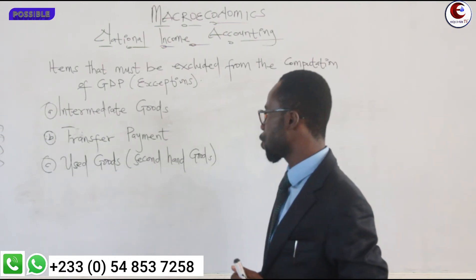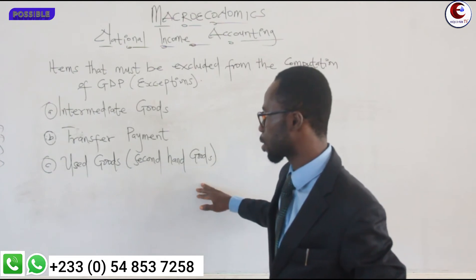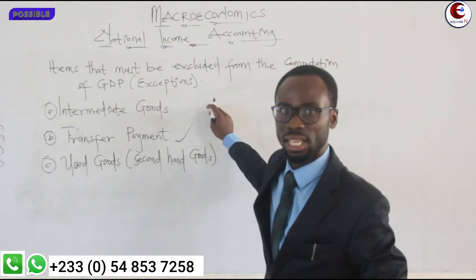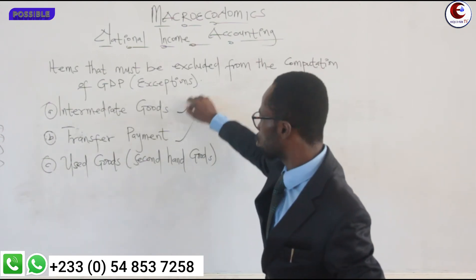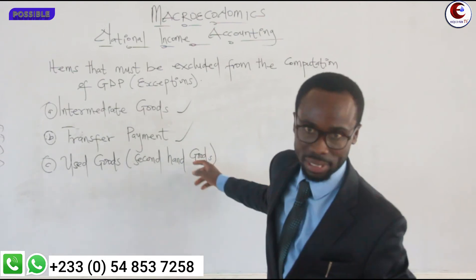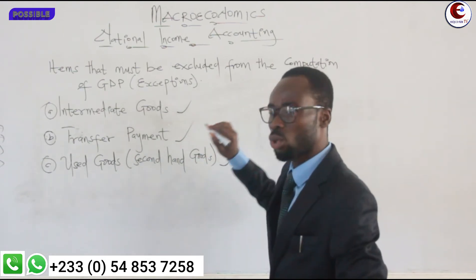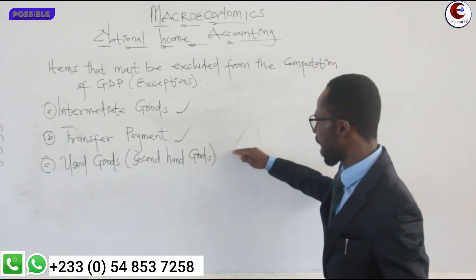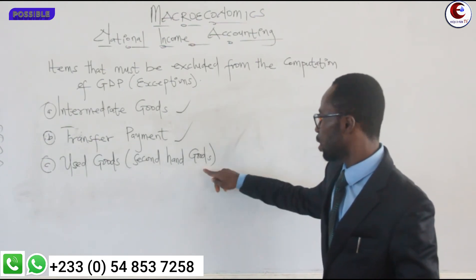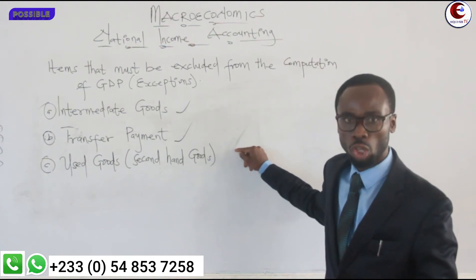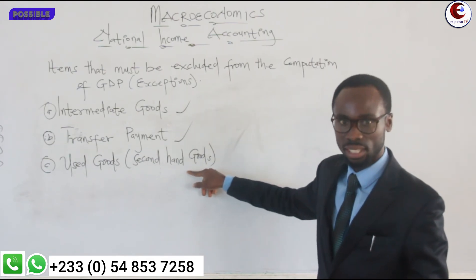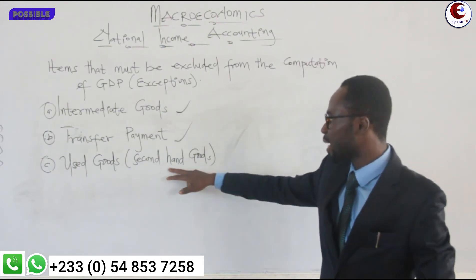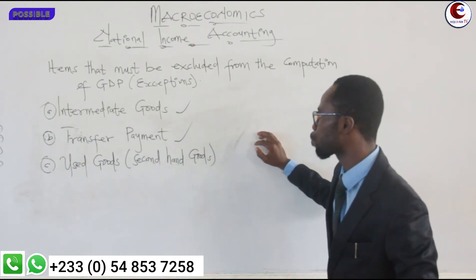The next exclusion is used goods or second-hand goods. We are going to exclude these because if we capture them, they are going to lead to double counting, which will mislead the statistical analyst. Used goods or second-hand goods are excluded in the computation of GDP because the household that originally first purchased the item already had it captured in the GDP at that time.